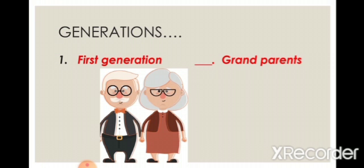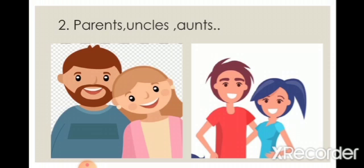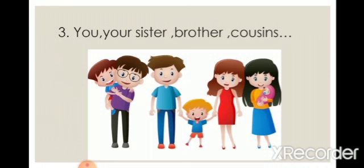So the generations are: first generation — grandparents; second generation — parents, uncles, and aunts; third generation — you, your sister, brother, and cousins. And when you get married and have kids, your kids will be the fourth generation.